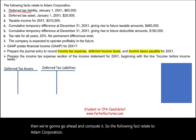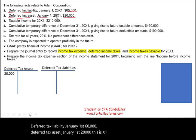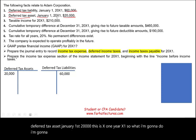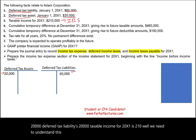Deferred tax liability, January 1st: $60,000. Deferred tax asset, January 1st: $20,000. This is year X1. I'm going to start by creating a T-account. Deferred tax asset: $20,000. Deferred tax liability: $60,000. Taxable income for 20X1 is $210,000 — this is IRS taxable income.